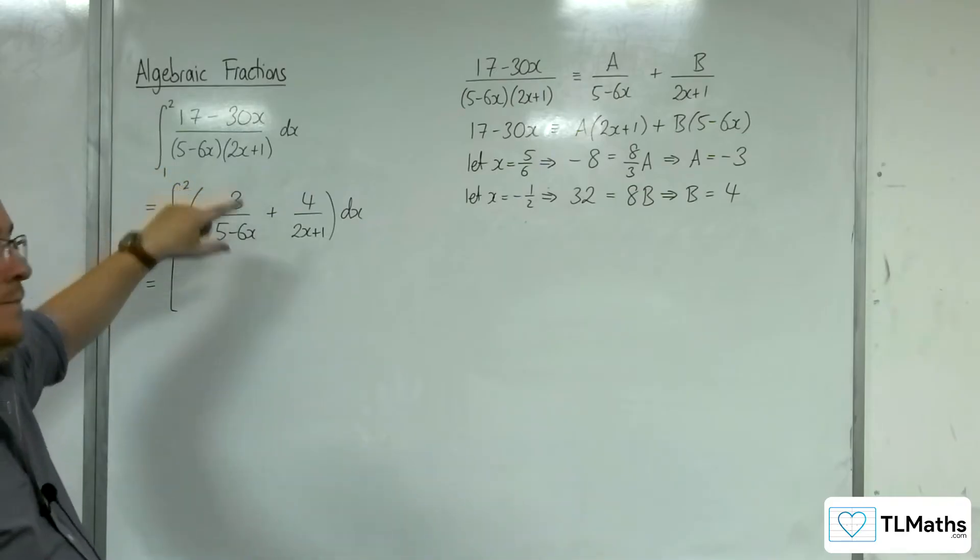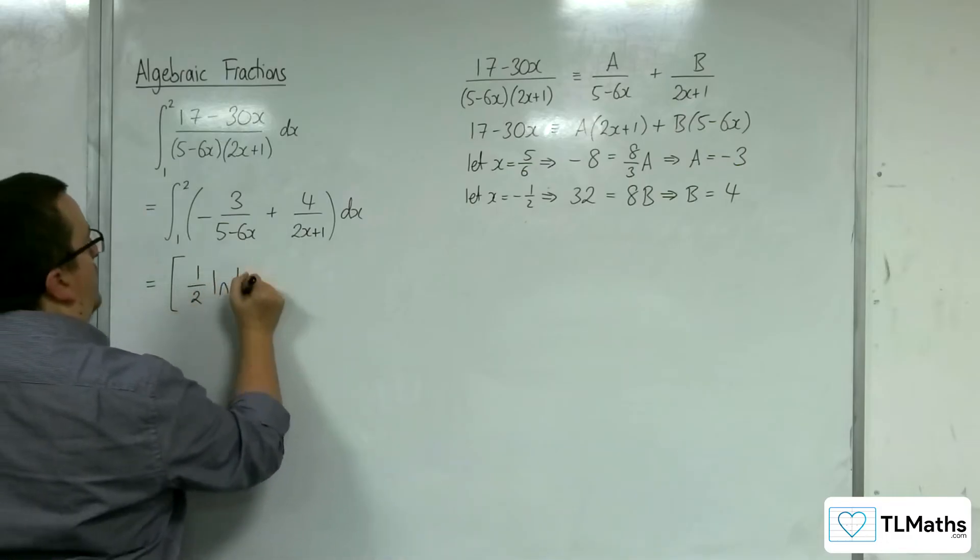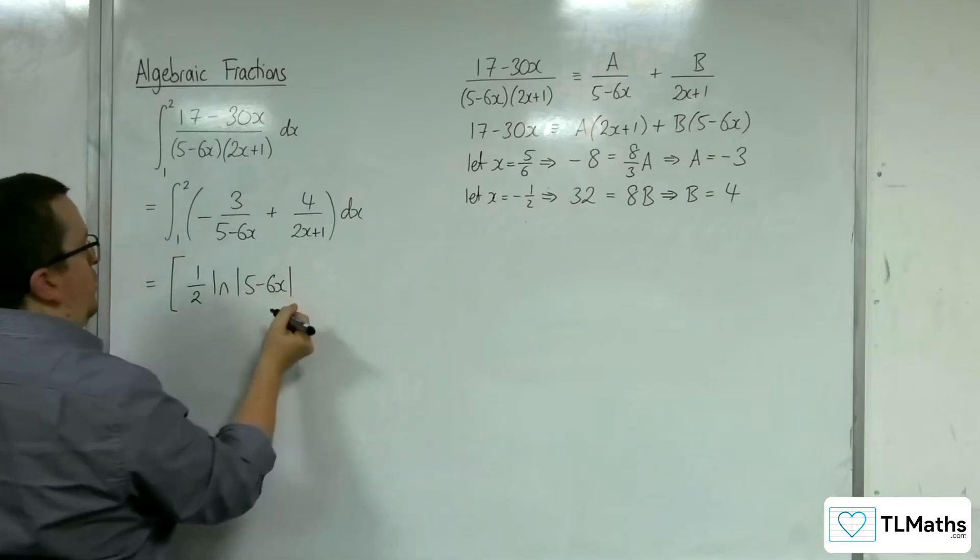So, we've got a half of what we need. So, this should be 1 half, the natural log of 5 take away 6x in modulus signs.